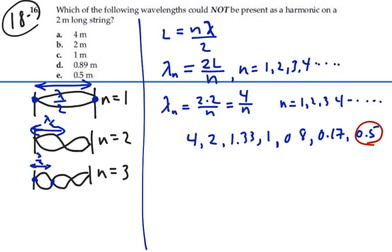So point five, four, two, and one are all possibilities for wavelengths on the string. Point eight nine is not, so for this problem we select point eight nine as not a harmonic on a two meter long string.